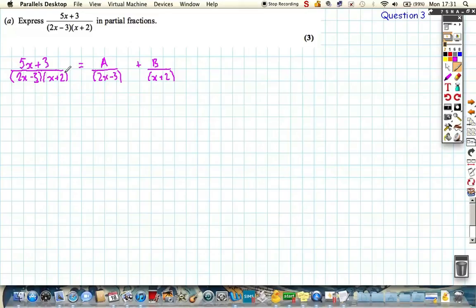So if we multiply both sides by this double bracket here, we're actually going to get the expression 5x plus 3 is equal to A. The 2x minus 3 is going to cancel, it's going to give us A times (x plus 2). And the x plus 2 is going to cancel, so it's going to give us B brackets 2x minus 3.